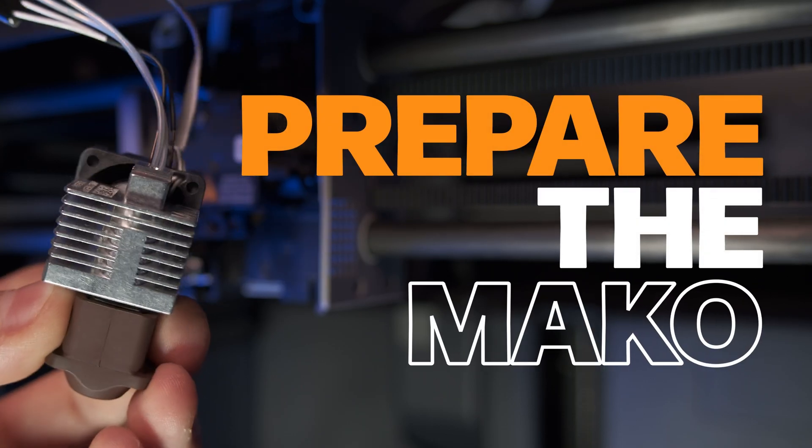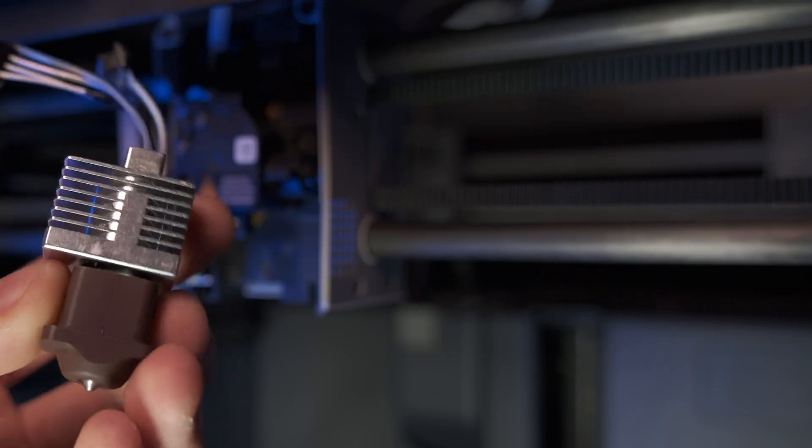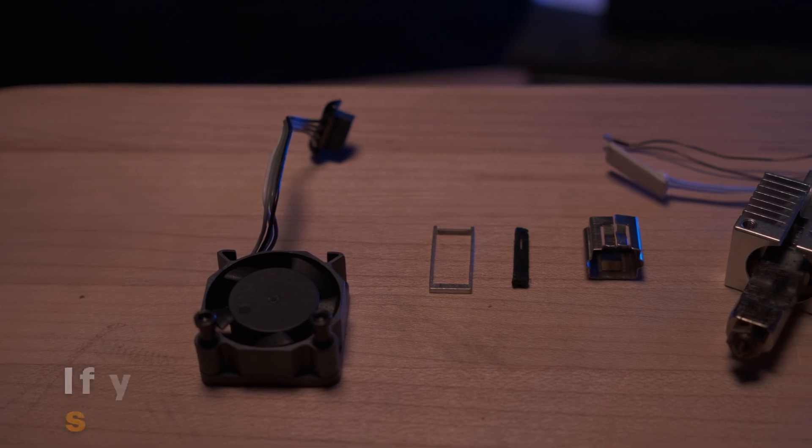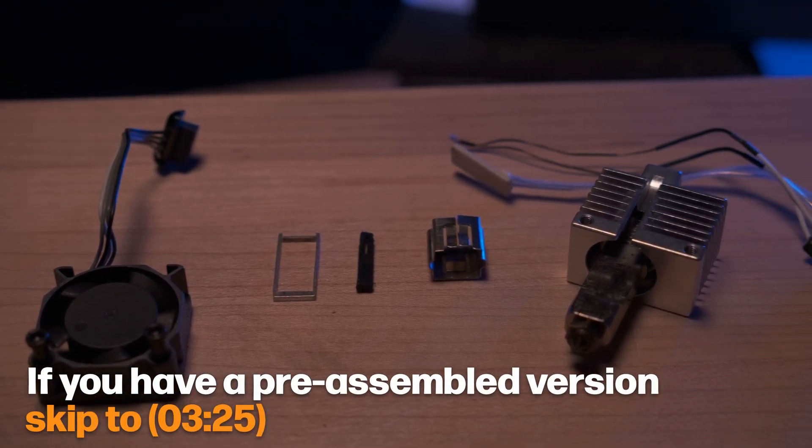Now let's prepare the Mako for installation. If you have the bare bones version, first thing you're going to want to do is take all the stuff out of the box. Place it all on the table so you can clearly see all the parts.